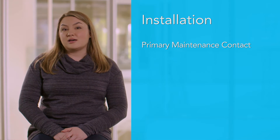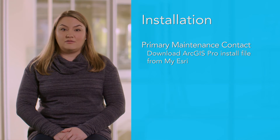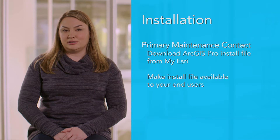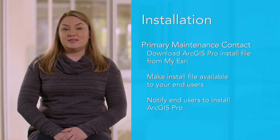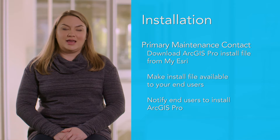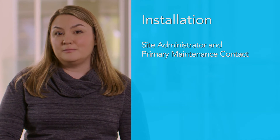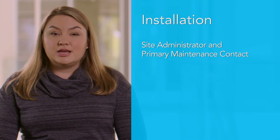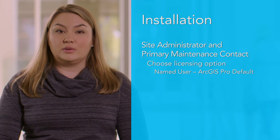First, if you're the primary maintenance contact for your organization, you'll need to download the ArcGIS Pro install file from MyEsri and make it available to users on your internal network. Notify your end users of the install file location. If you're a site administrator and/or primary maintenance contact, you'll need to consider the best licensing option for the organization.